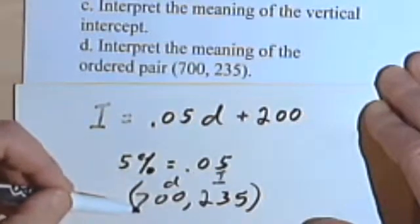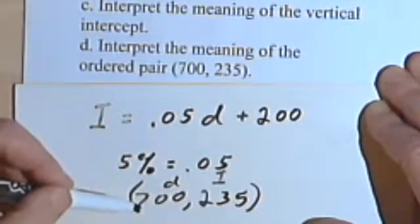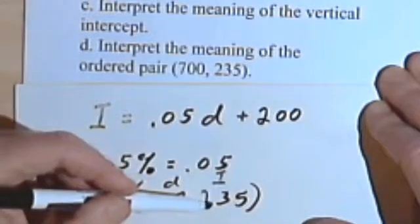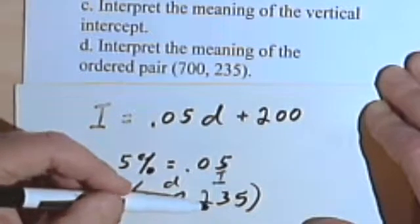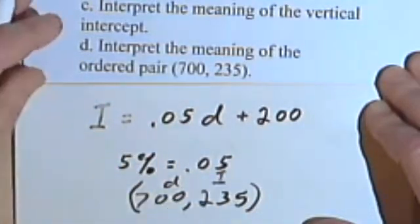So what this ordered pair tells us is that when she has sold $700 worth of merchandise, her income for that week will be $235.